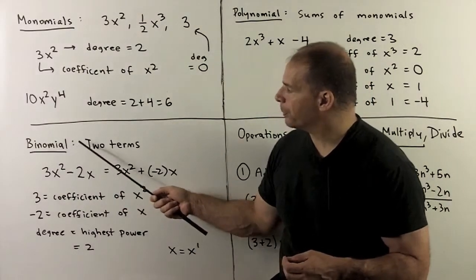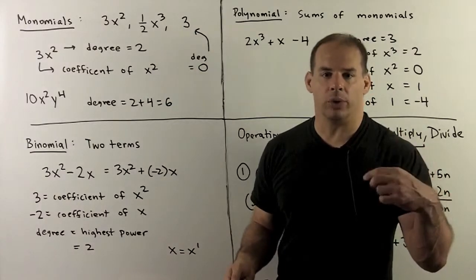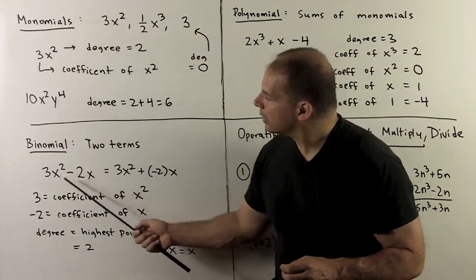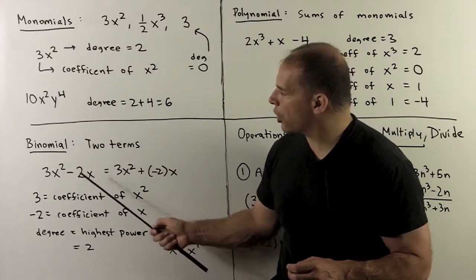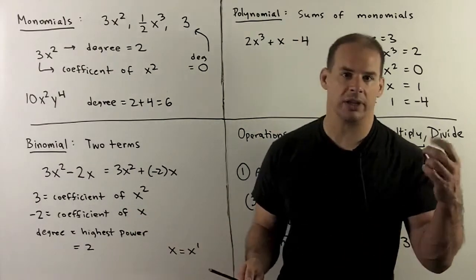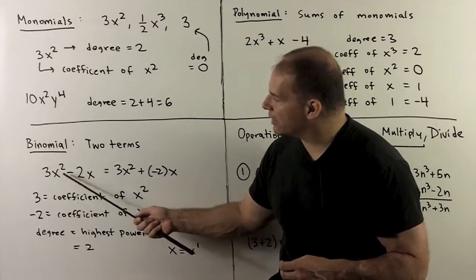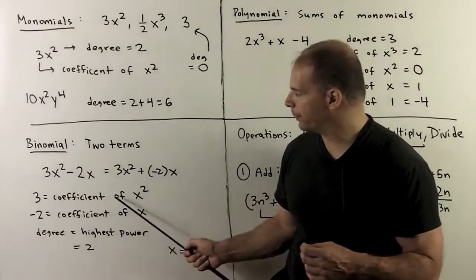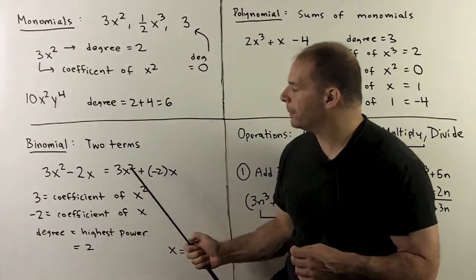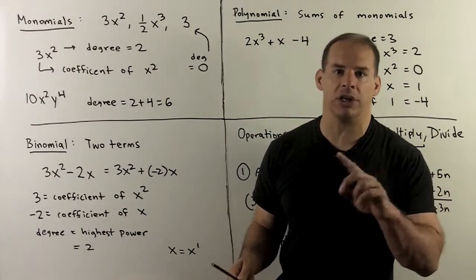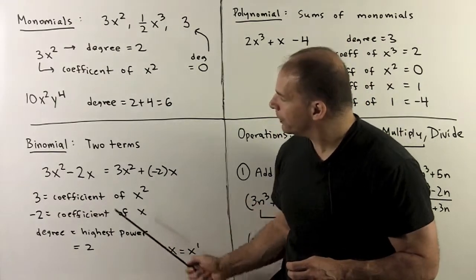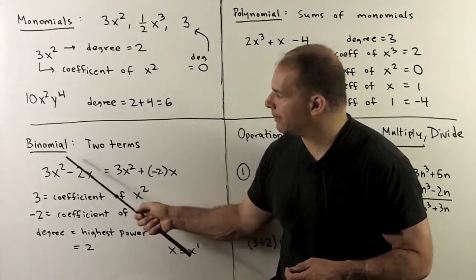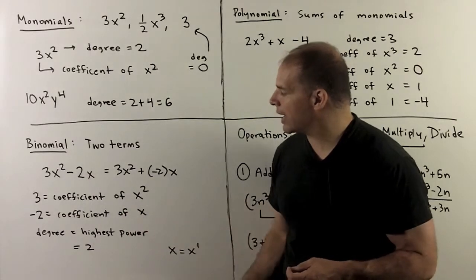If we consider binomials, these are going to be sums of monomials — just two terms. For instance, we have things like 3x squared minus 2x. The coefficient of x squared is equal to 3. For the coefficient of x, you can think of minus 2x as being plus minus 2 times x, so the coefficient is minus 2. When we talk about degree for a binomial, it's just going to be the highest power, or the largest exponent on each term. Having x by itself is the same as x to the 1st power, so the largest exponent here is 2, and the degree of 3x squared minus 2x is equal to 2.